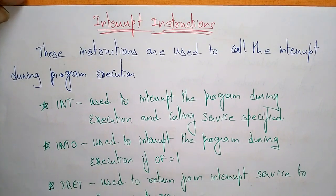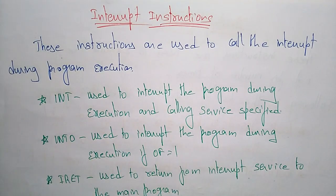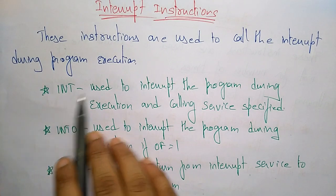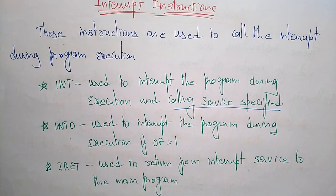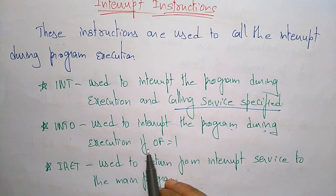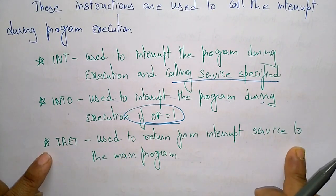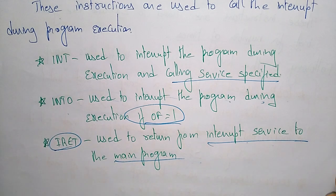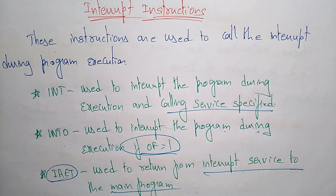The eighth and last type is the interrupt instruction, used to call an interrupt during program execution. INT is used to interrupt the program and call a specified service. INTO is used to interrupt execution when the overflow flag is set. IRET (interrupt return) is used to return from the interrupt service routine back to the main program. These are all the different instruction sets of the 8086 microprocessor.